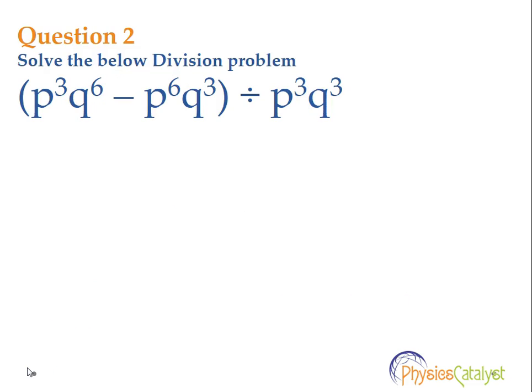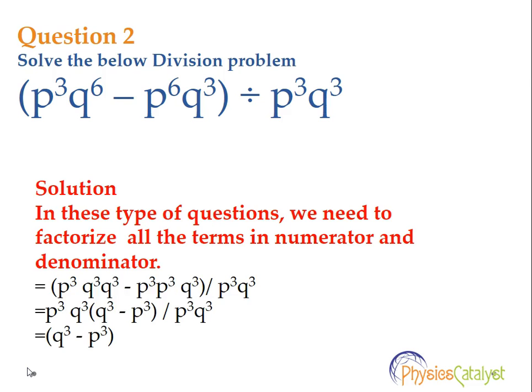Let's take a look at another problem. Solve the below division problem: p cube q to the power 6 minus p to the power 6 q cube, divided by p cube q cube. This question is a little bit different. Here the numerator is having two terms and the denominator is having only one term.